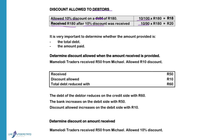It is therefore very important to determine whether the total debt is given or the amount paid is given, because the calculation will be done differently. We need to determine the discount allowed when the amount received is provided.